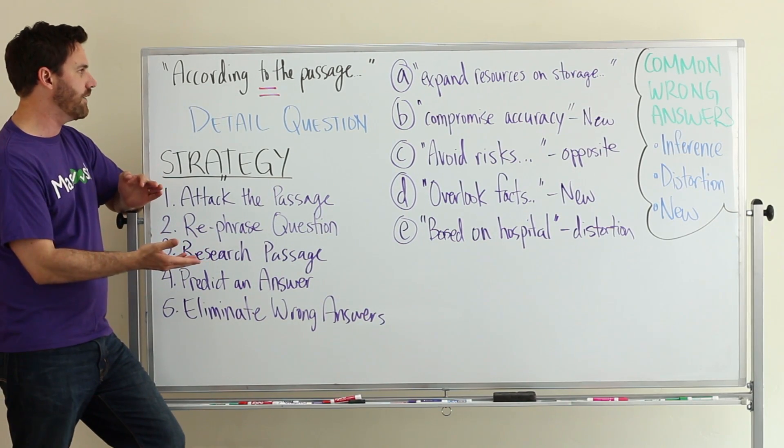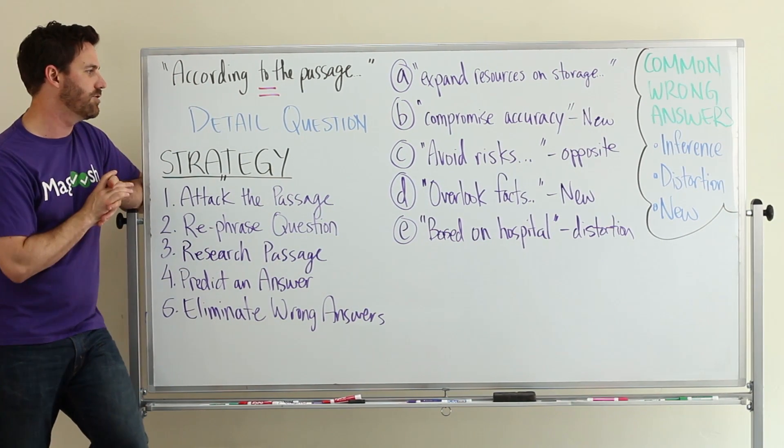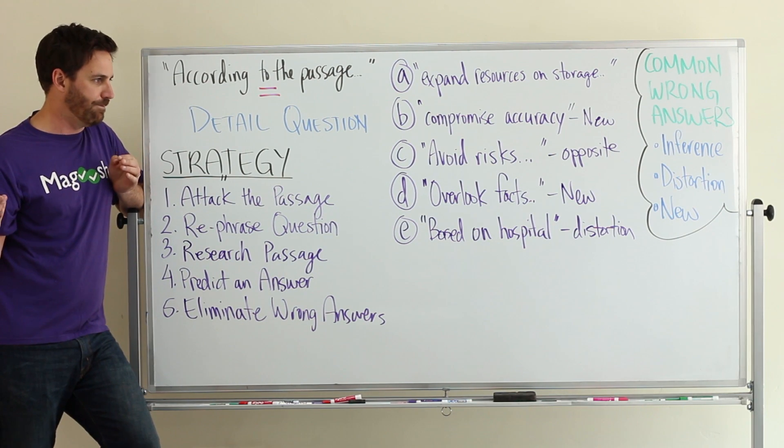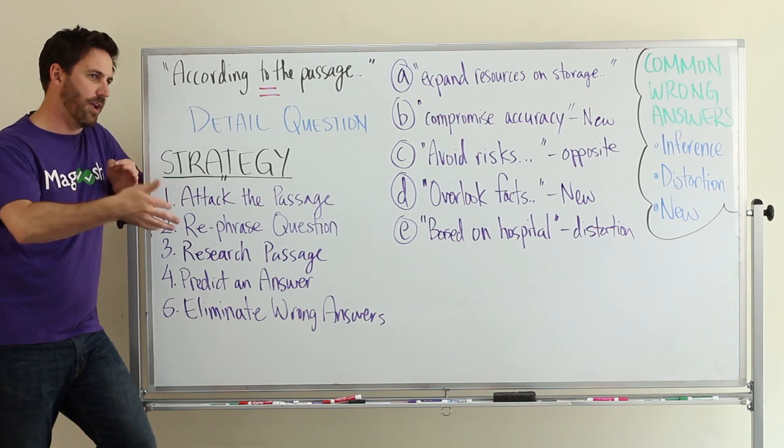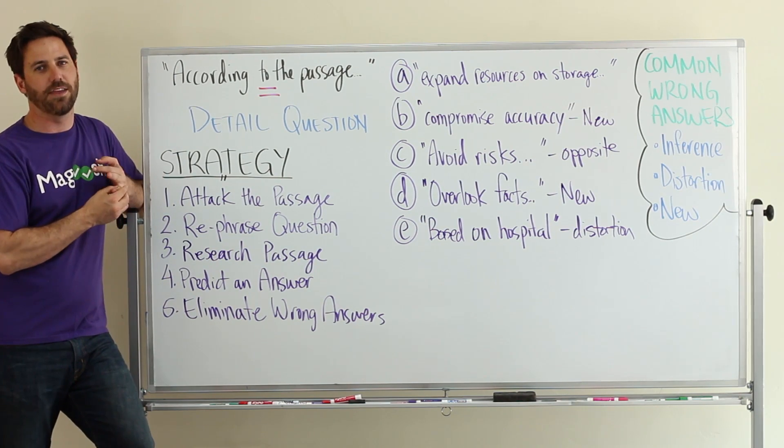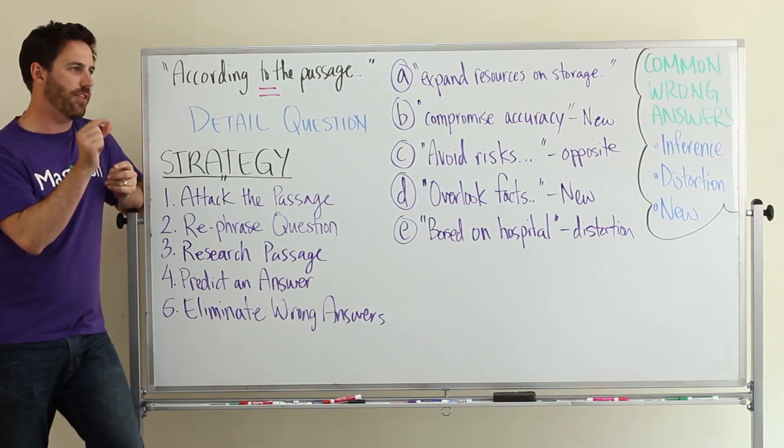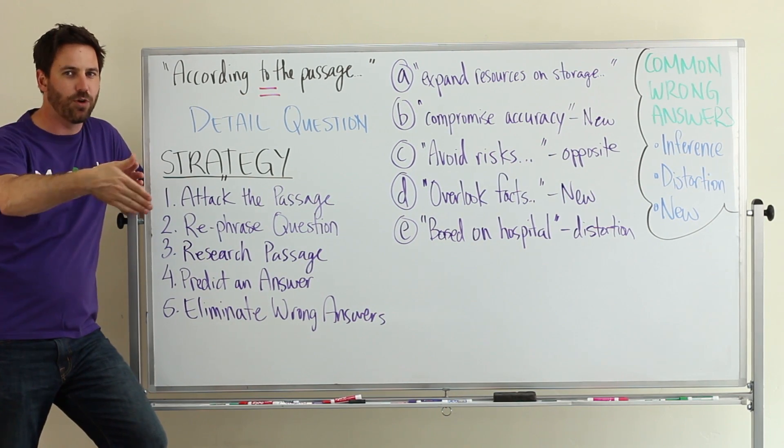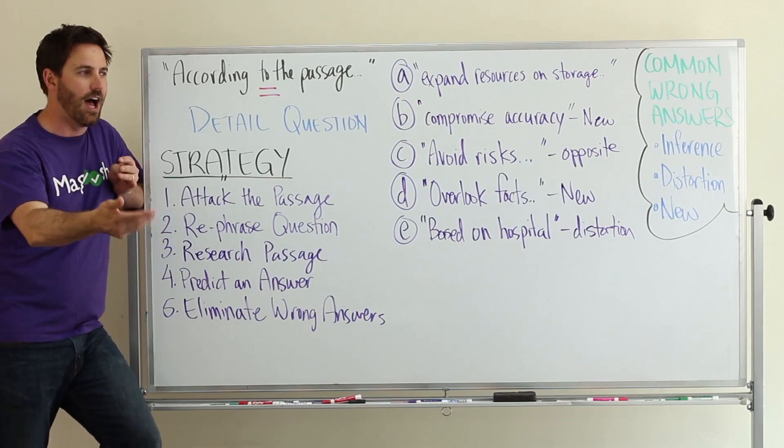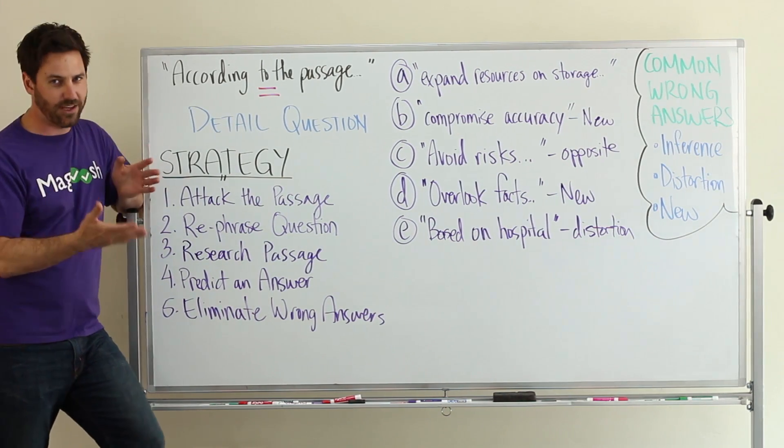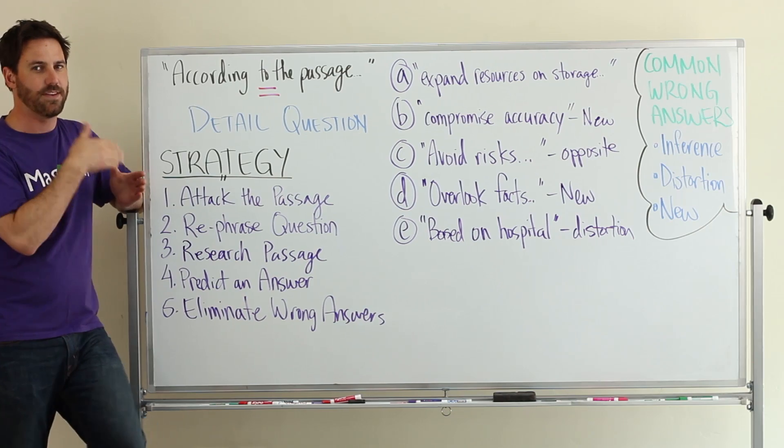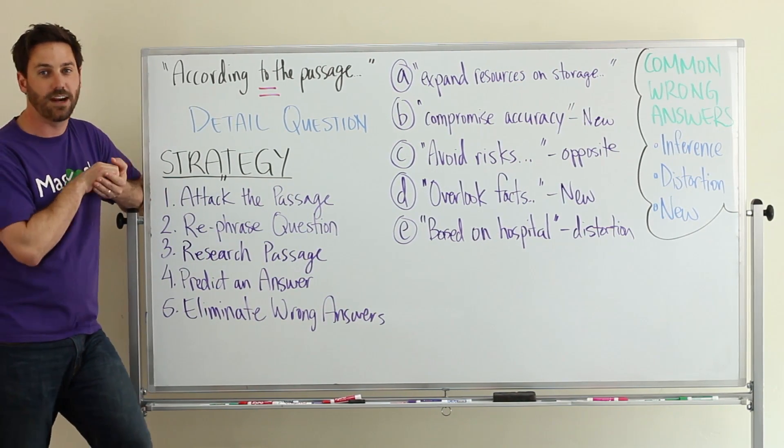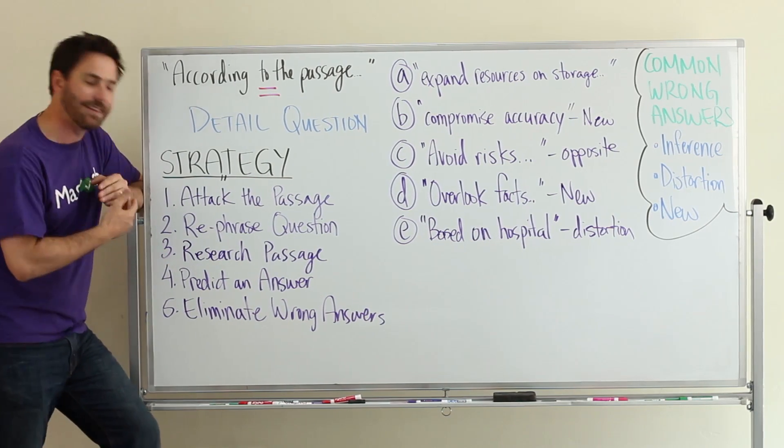Step two is rephrase the question. So we know it's according to the passage, and really what they want to know is what happens when researchers collect data the way that they do for trials. And so one important thing to notice in this question: it's not what the people who wrote this article are recommending or hoping to change, it's how things are now. So we need to make sure we stay focused on that point. And I know that they talked about this in the first paragraph, so I'm going to be focused there while researching the passage.